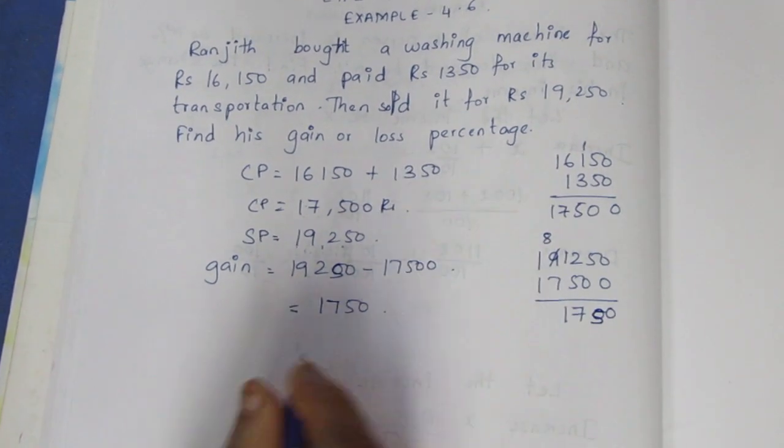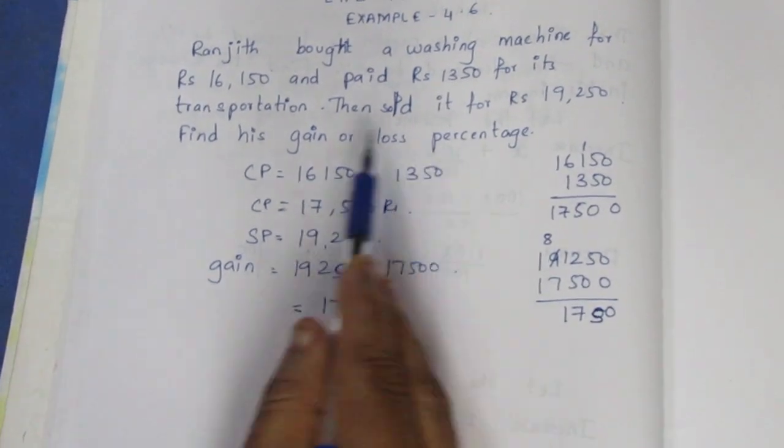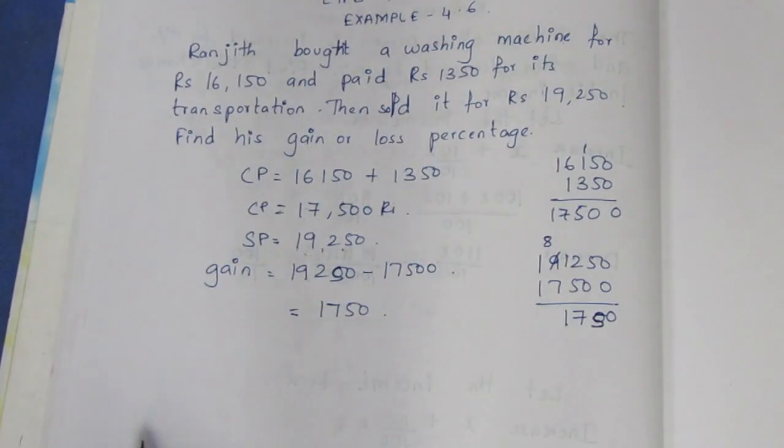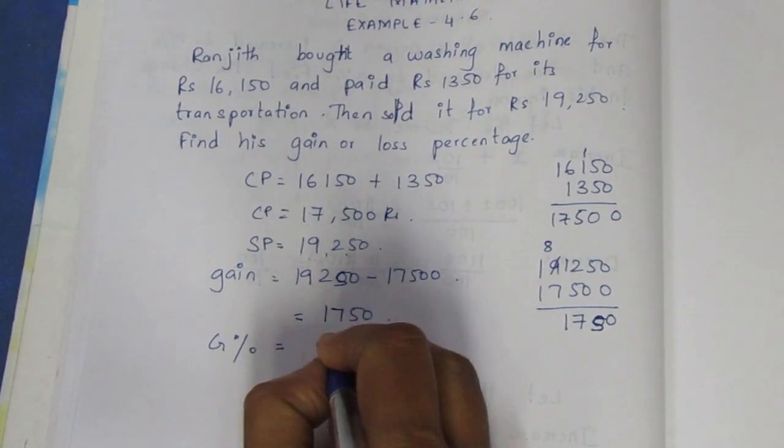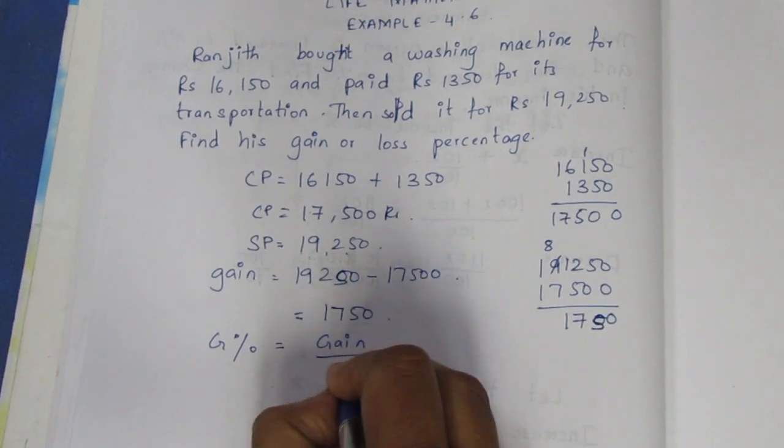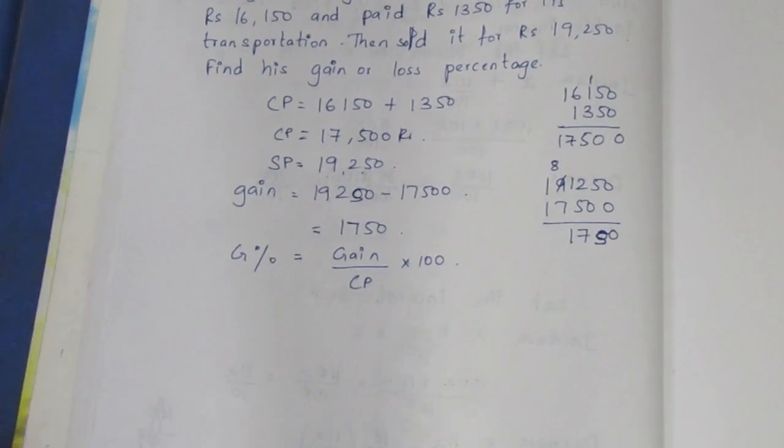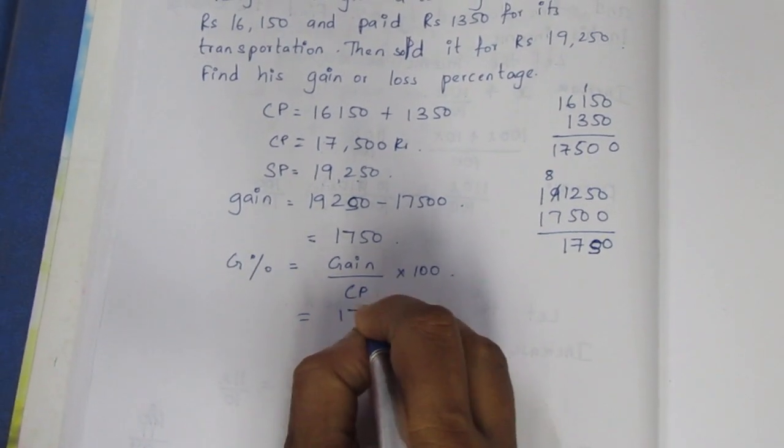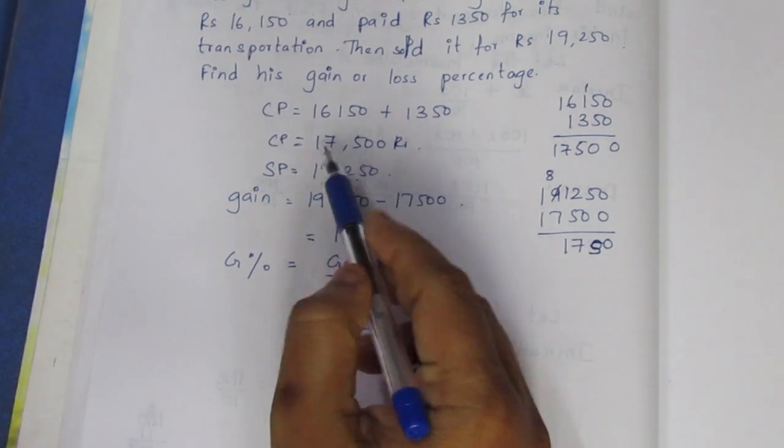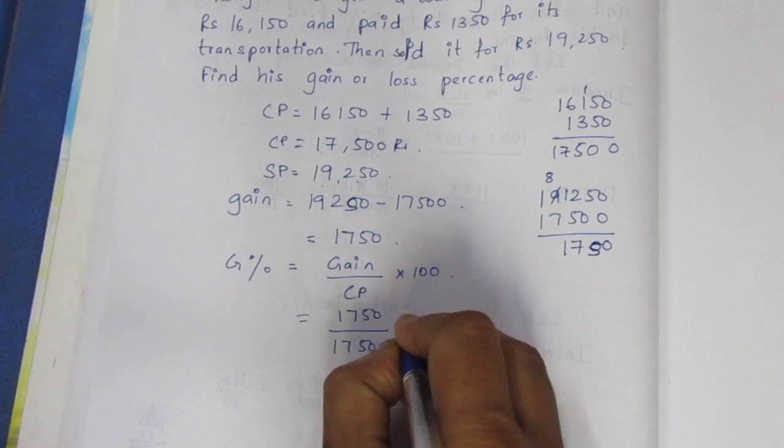So gain percent is equal to the formula: gain divided by CP times 100. So gain percent equals 1,750 divided by 17,500 times 100.